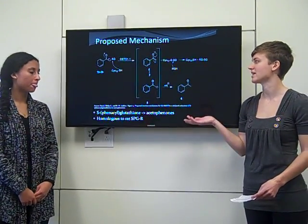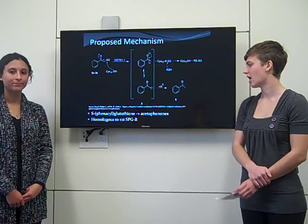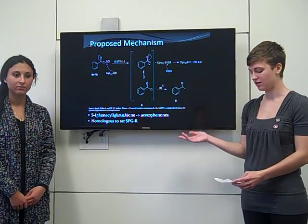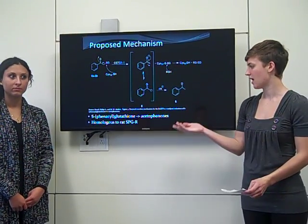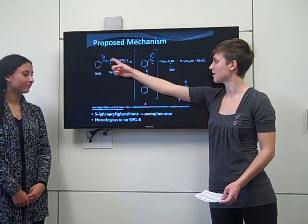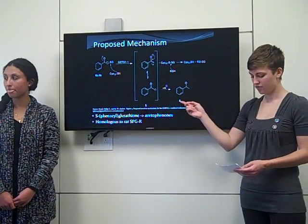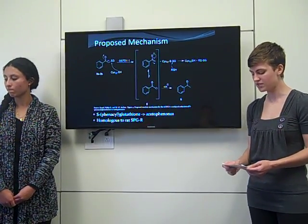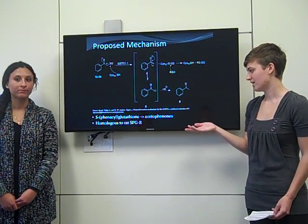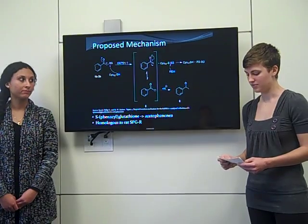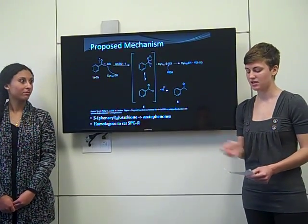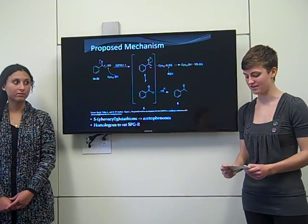Here is one of our proposed mechanisms for the enzyme GSTO-1. It involves the compound S-phenacylglutathione, which is the substrate. Prior to this mechanism, glutathione reacts with toxic haloketone to produce S-phenacylglutathione. The cysteine binding site of GSTO-1 then reacts with the substrate, reducing it, and producing acetophenone. This mechanism was initially proposed because of the structural and functional similarities between GSTO-1 and S-phenacylglutathione reductase found in rat liver, and appears to be unique to this enzyme within the GST superclass, most likely due to it being the only class with the cysteine binding site.